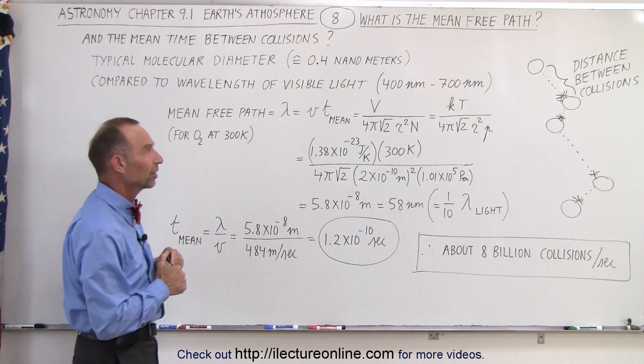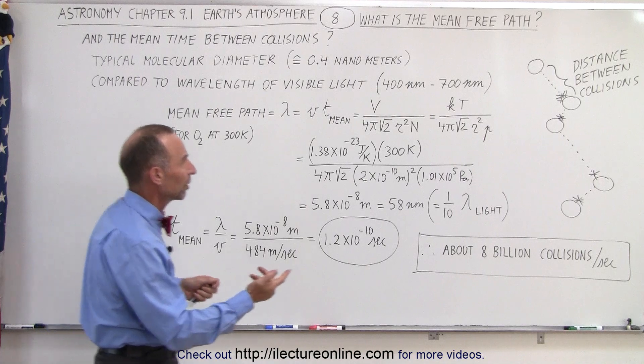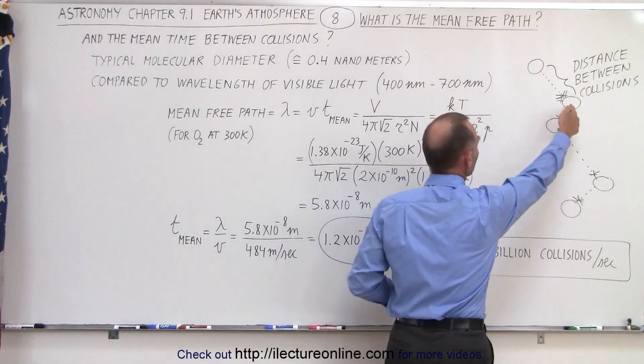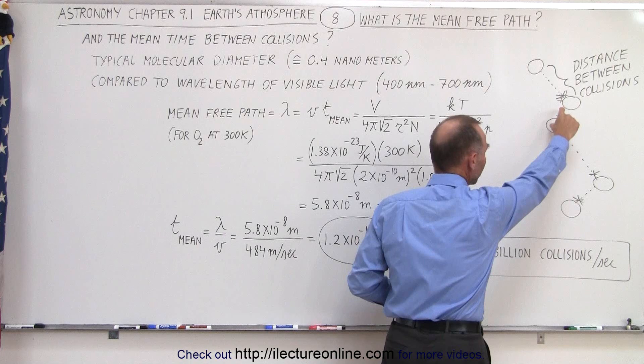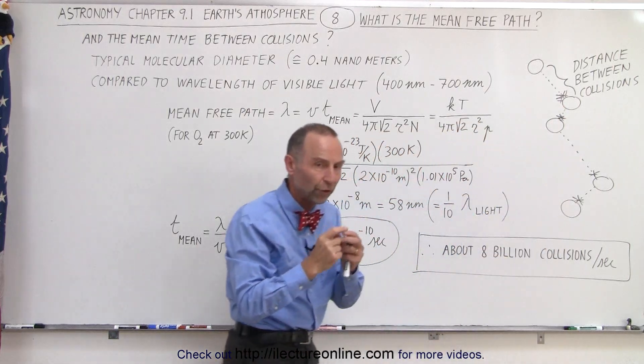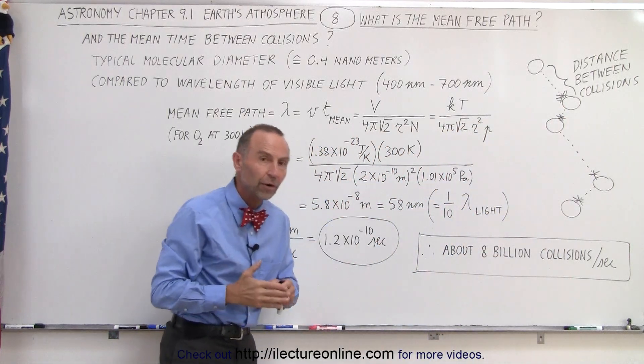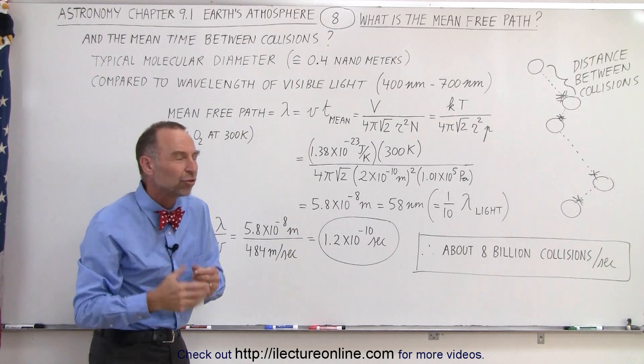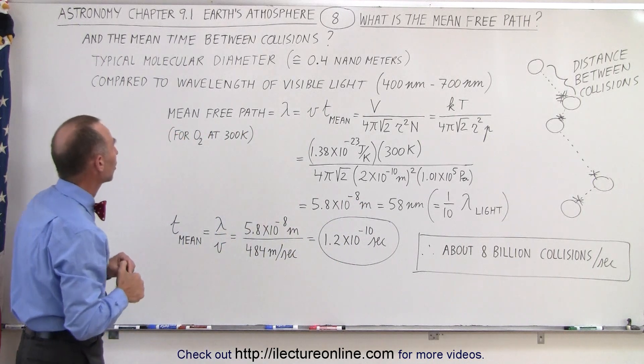That's kind of an interesting concept. So here we can see that a molecule will bounce into another molecule, will bounce into another molecule and so forth. Sometimes the distance between collisions is very short. Sometimes it's a little bit farther. So what is the average distance, the mean distance between those collisions.